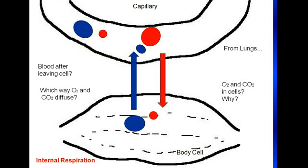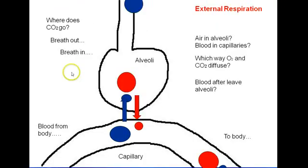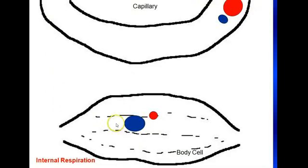This blood will then travel to the right side of the heart, and then we go back. This is the blood coming from the body, from the right side of the heart. The CO2 that's produced in the body cell goes into the blood, up to the right side of the heart, goes into the lungs — specifically the alveoli — diffuses into the alveoli, and then you breathe it out.